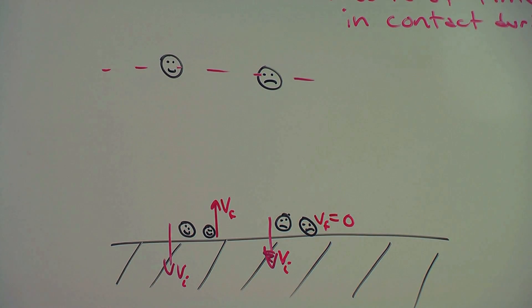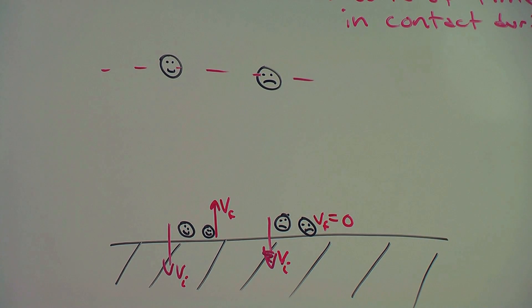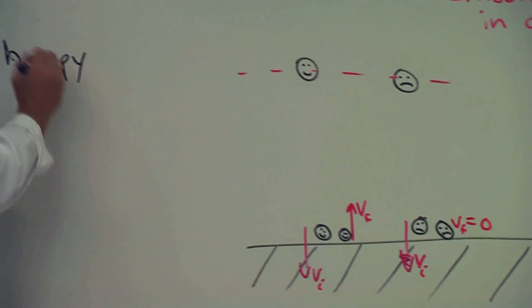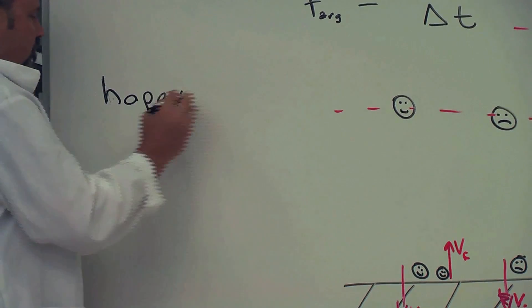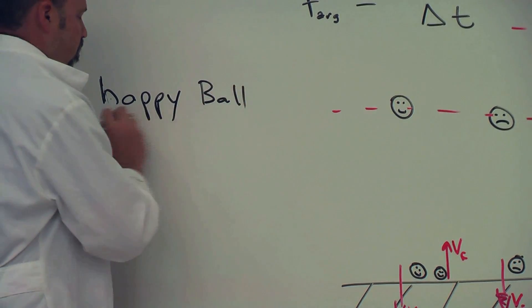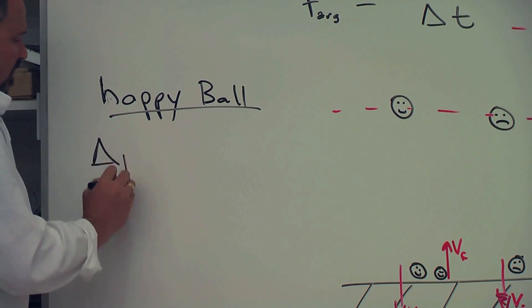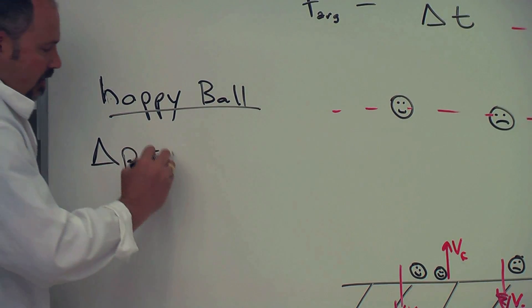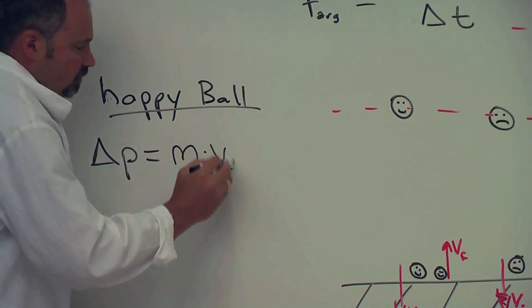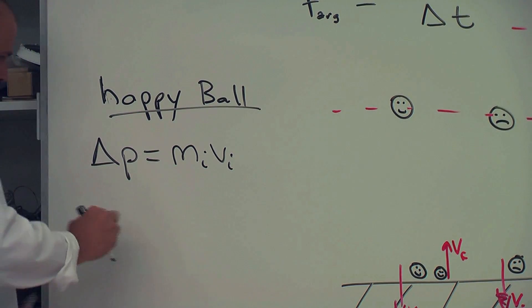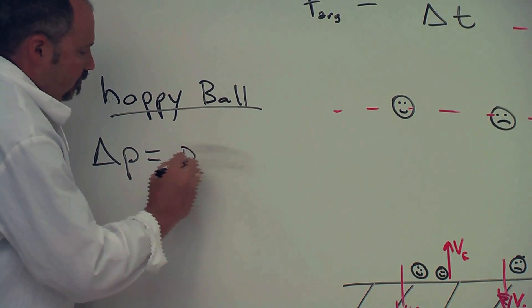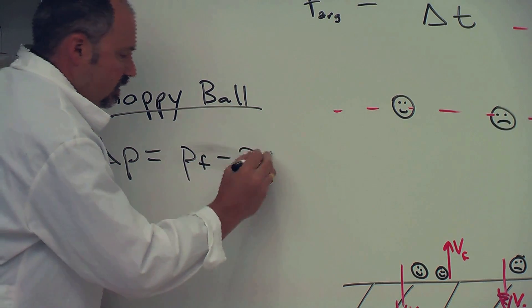And now let's figure out the impulse for each. Well, for the happy ball, the change in momentum, well it's just the mass of the ball before the collision. Oh, sorry. Let's be careful. Change in momentum is p final minus p initial.